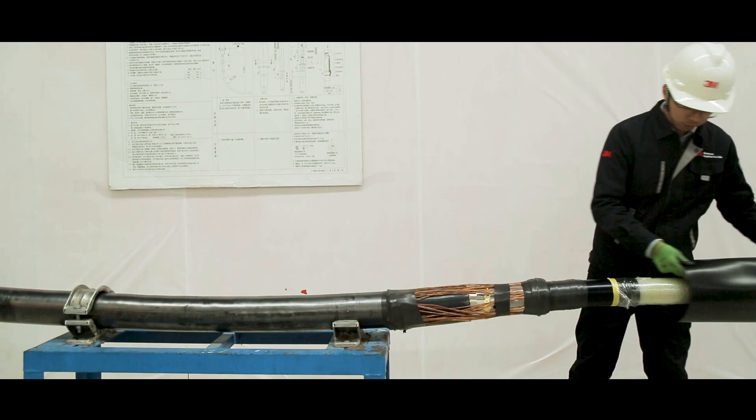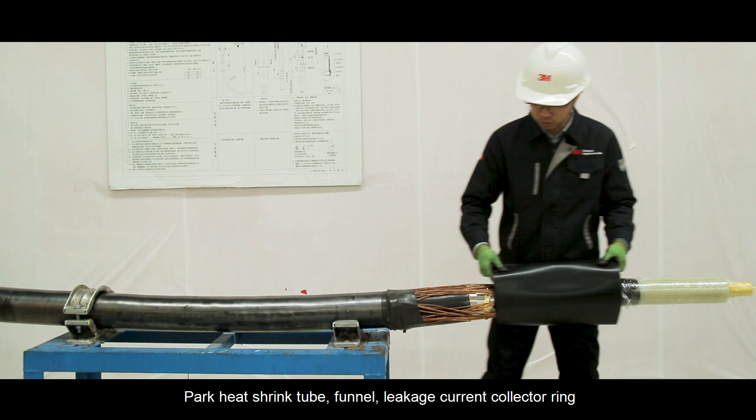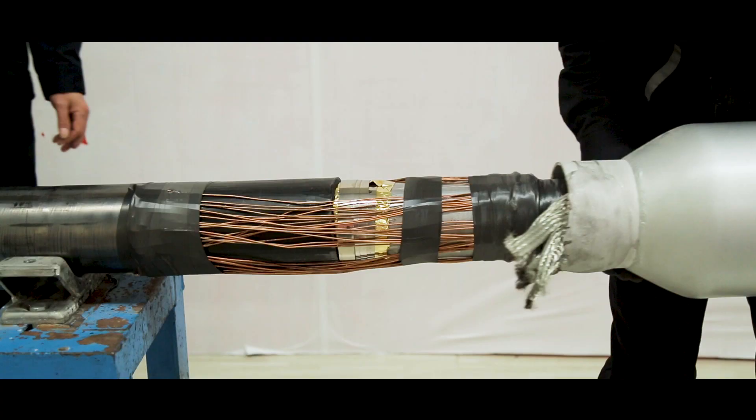Park heat shrink tube, funnel, leakage current collector ring, and semi-conductive tube onto the cable in the right sequence.